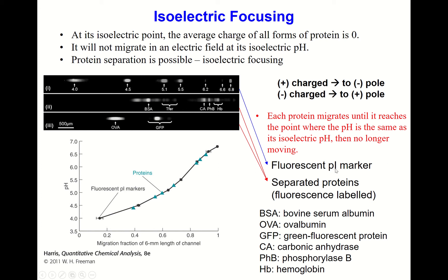Each protein migrates until it reaches the point where the pH matches its isoelectric pH, then it stops moving. Ionic markers are used as references. Looking at the plate, you can see BSA (bovine serum albumin) and other proteins are well separated by isoelectric focusing. When proteins are fluorescence-labeled, their positions can be detected by fluorescence.